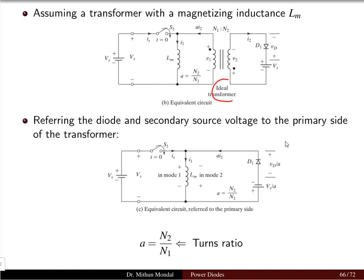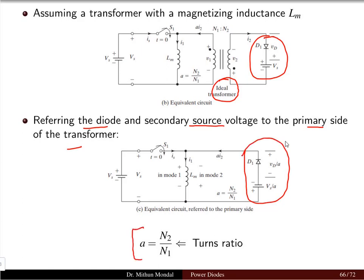If the transformer is ideal and we refer the diode and secondary voltage source to the primary side of the transformer, diode D1 and the secondary voltage source are referred to the primary side by dividing by the turns ratio N2/N1. By dividing the secondary voltage and the diode voltage by the turns ratio, they can be referred from the secondary side to the primary side, giving a circuit without a physical transformer.